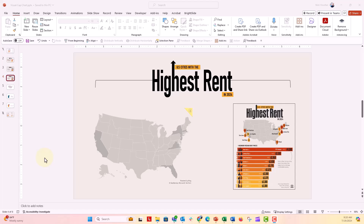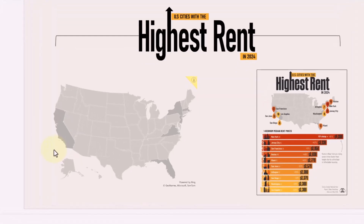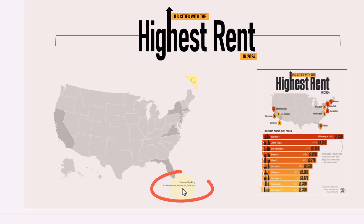Hi everyone, this is Nick. I wanted to come to you with a really quick tip from our last video in our mini-series on how to make a visual infographic inside of PowerPoint. In that video, we wanted to hide the Alaska state and the Hawaii state on this map, and we also wanted to hide this little 'powered by Bing' annotation.